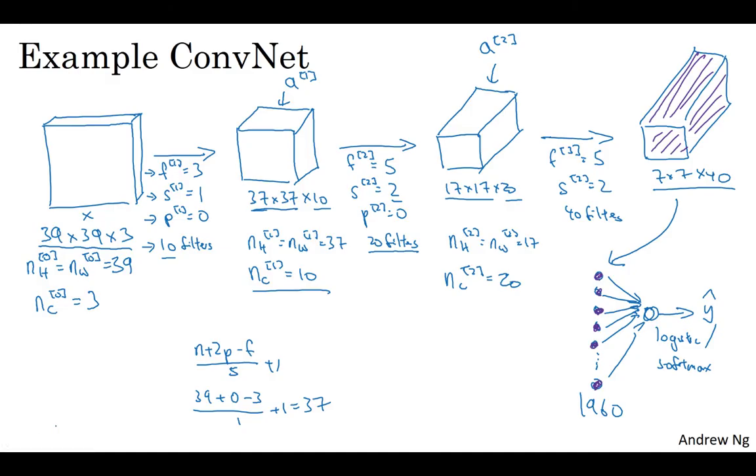But for now, maybe one thing to take away from this is that as you go deeper in the neural network, typically you start off with larger images like 39 by 39, and then the height and width will gradually trend down as you go deeper in the neural networks. It's gone from 39 to 37 to 17 to 7, whereas the number of channels will generally increase. It's gone from 3 to 10 to 20 to 40. And you see this general trend in a lot of other convolutional neural networks as well.